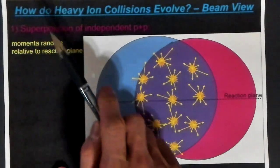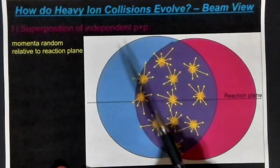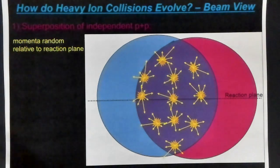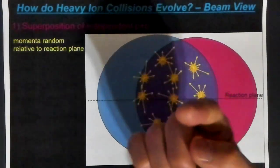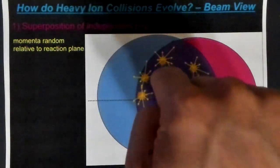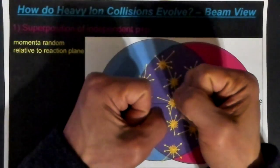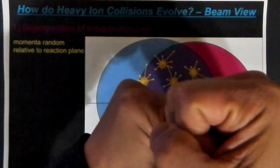Let's first start off with a very simple model, the independent particle-particle collision model. Here we see, imagine we have one nucleus going this way, so the beam axis is perpendicular to the page. One nucleus going this way, and the other nucleus going in the opposite direction. There's a collision like this.